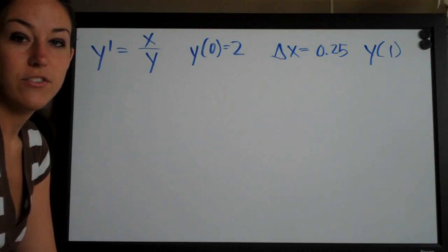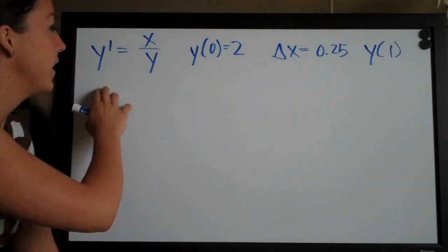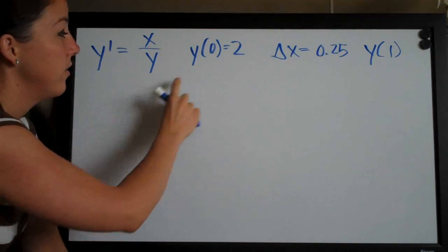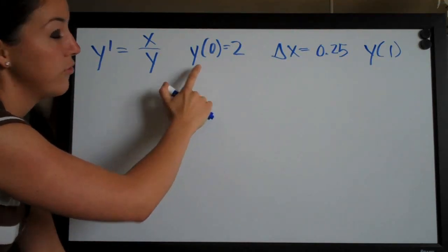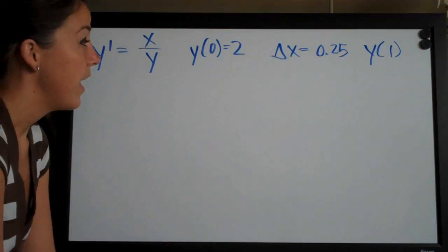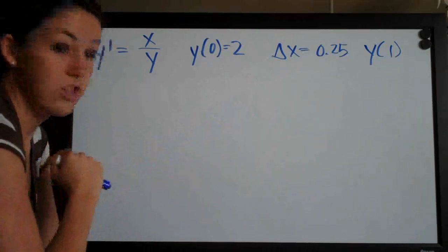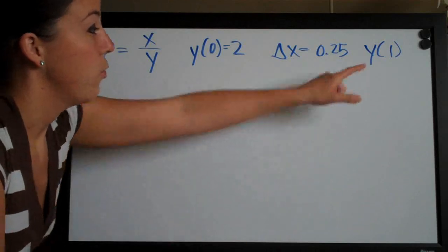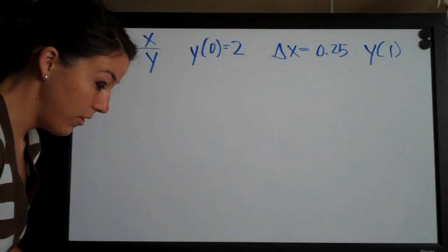This one asks us to consider the following initial value problem: y prime equals x over y. They give y of 0 equals 2 as the initial condition, and delta x - they ask us to use delta x equal to 0.25 to find y of 1. So let's go ahead and get started.